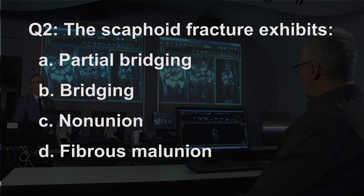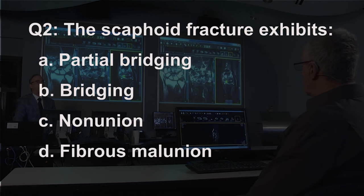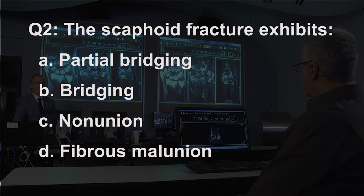Question number two: the scaphoid fracture exhibits — A, partial bridging; B, bridging; C, nonunion; D, fibrous malunion. Let's go back to the images.